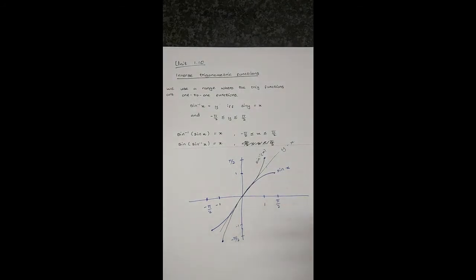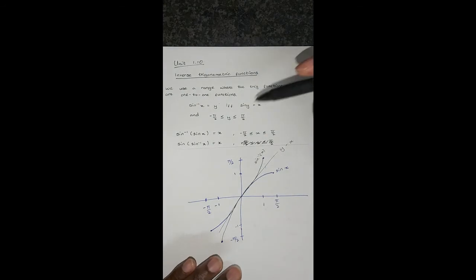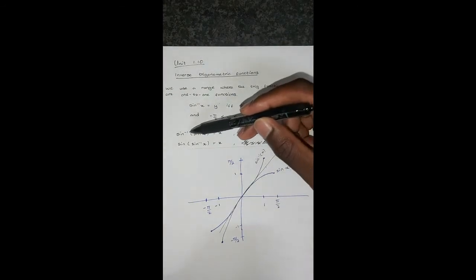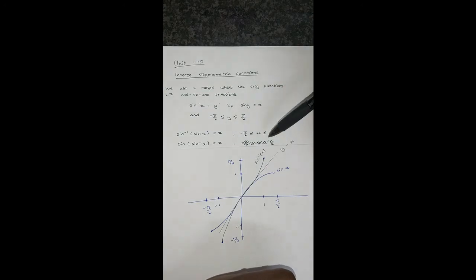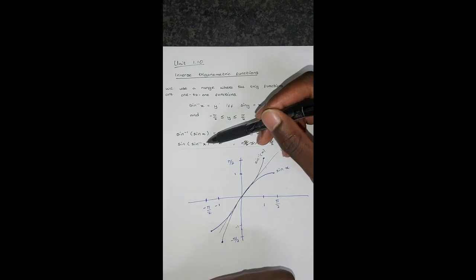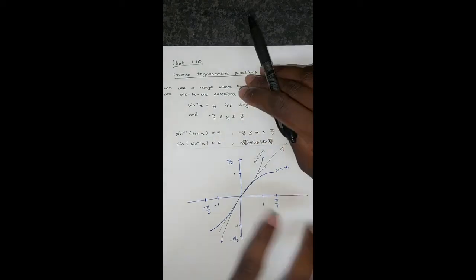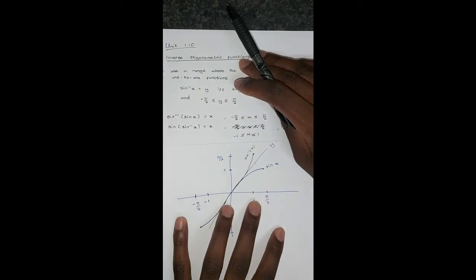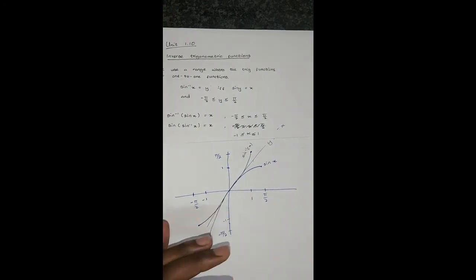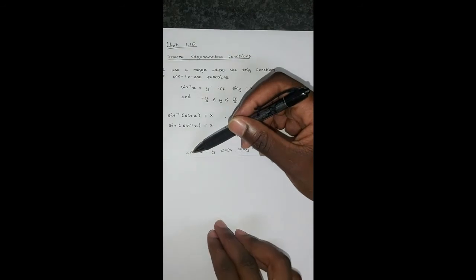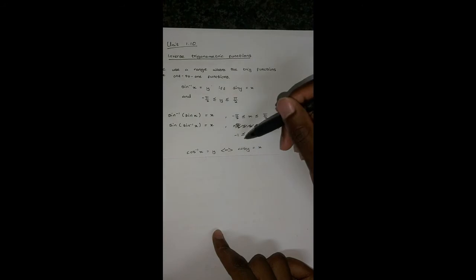So those are the two graphs — sine and arcsine. For the cancellation equations: arcsin(sin(x)) equals x where x is between negative pi over 2 and pi over 2, and sin(arcsin(x)) equals x where x is between negative 1 and 1, inclusive.